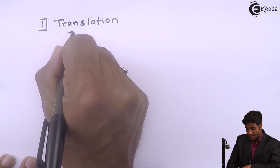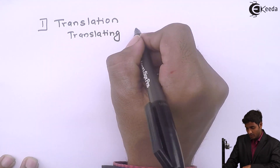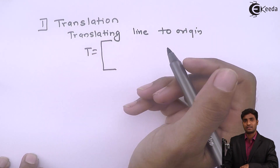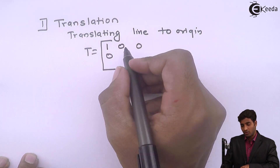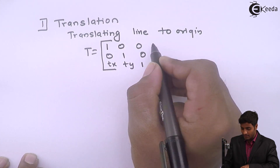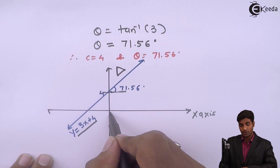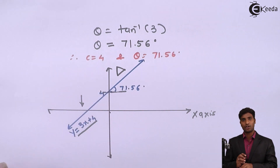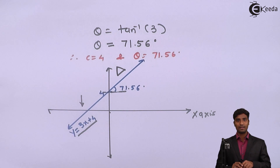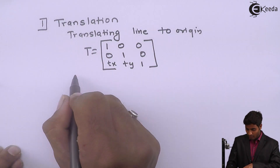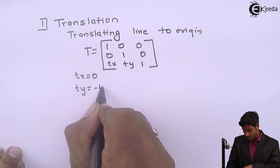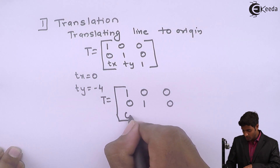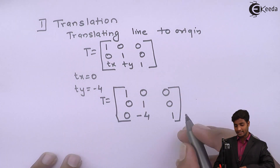The first transformation is translation — translating the line to the origin. The standard translation matrix is [1 0 0 / 0 1 0 / TX TY 1]. Since we are moving in the downward y-direction only, TX = 0 and TY = -4. So the translation matrix becomes [1 0 0 / 0 1 0 / 0 -4 1].